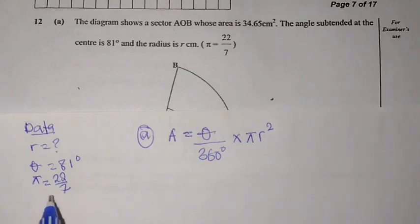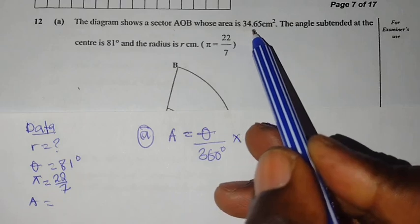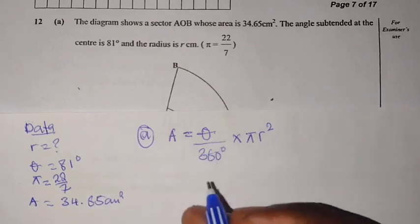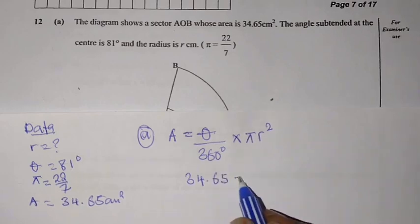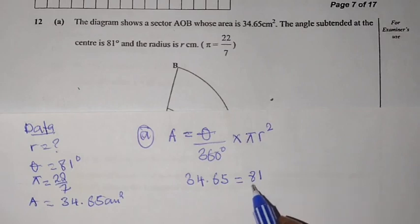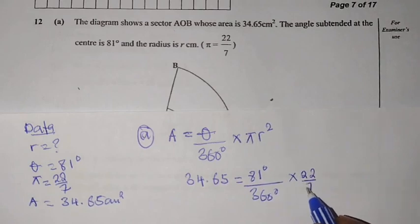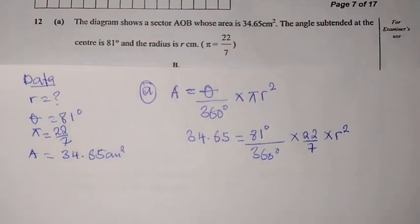I'm just going to substitute. Remember your area you have been given in the equation which is area equals 34.65 square centimeters. So where we have area, we are going to put 34.65. I need to substitute on this formula. Where there is area, we put 34.65 equals, where there is theta, we put 81 degrees over 360 degrees times π, 22 over 7 times R squared. The radius is what we want.